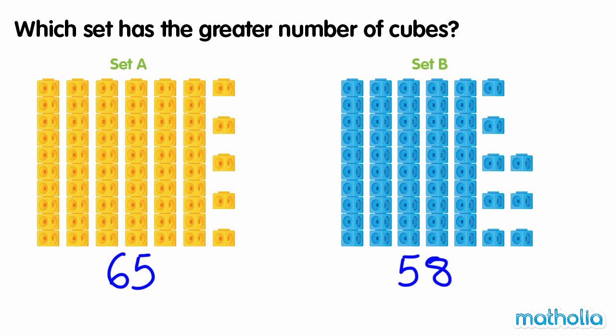let's start by comparing the digits in the tens place. In set A, there are six tens. In set B, there are five tens. Six tens is greater than five tens. Sixty-five is greater than fifty-eight. So set A has the greater number of cubes.